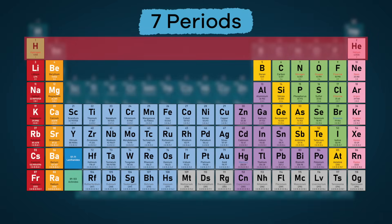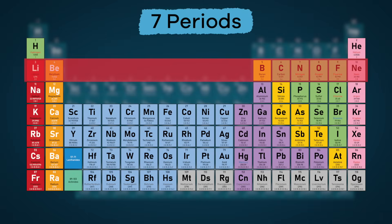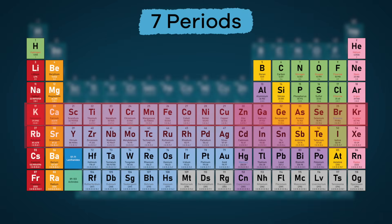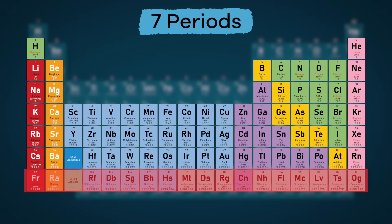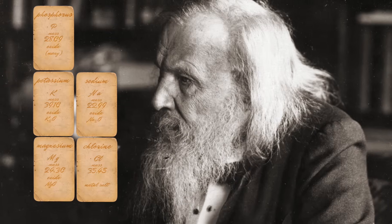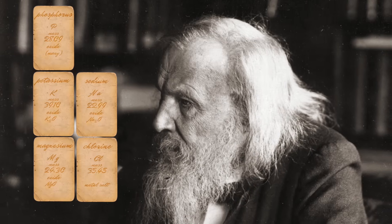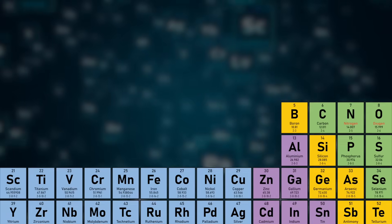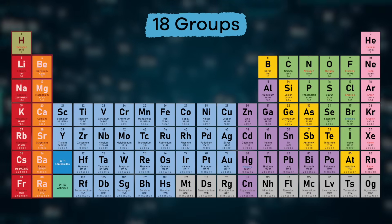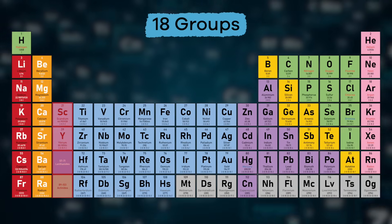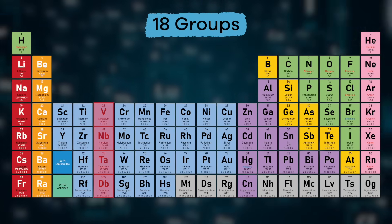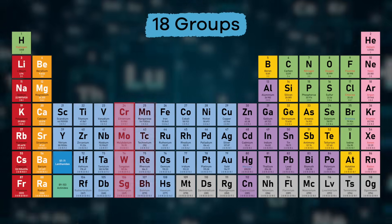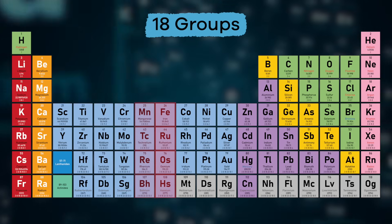These rows are called periods. There are seven total periods in the periodic table. Remember how Mendeleev grouped similar elements in the same column? The periodic table is organized in that same way. These vertical columns are called groups, and there are 18 of them.